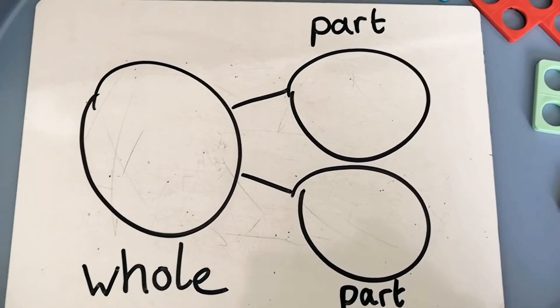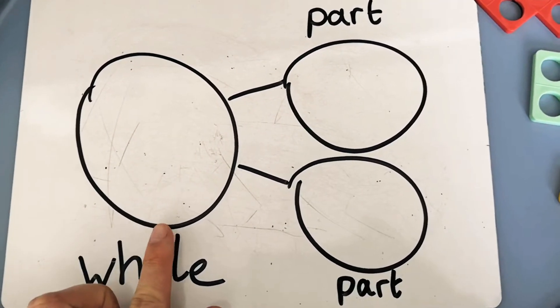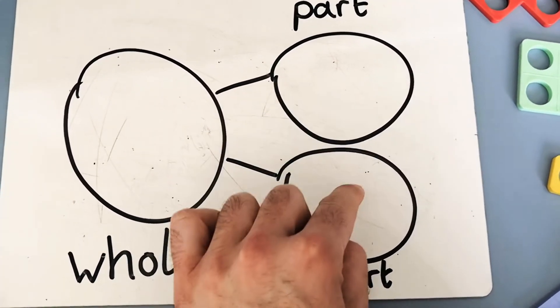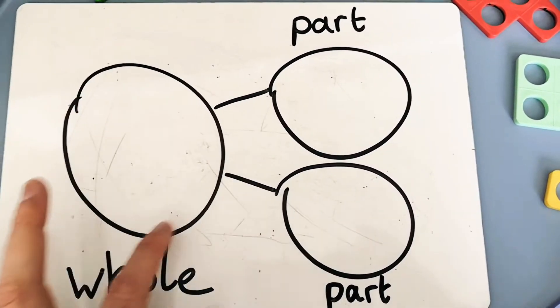The key thing to remember with a part-whole model is that we have a whole and then we have our two parts, and our two parts add up to make the whole which is our total.